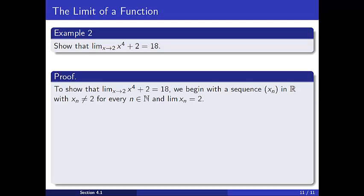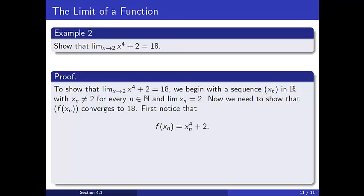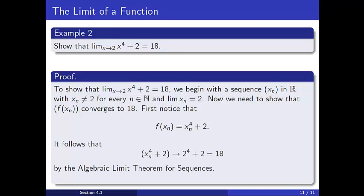Now for the formal proof. To begin, we let x sub n be a sequence in R with x sub n not equal to 2 for all n, and the sequence x sub n converges to 2. We need to show that the sequence f of x sub n converges to 18. Observe that f of x sub n is equal to x sub n to the 4th plus 2. It follows from the algebraic limit theorem for sequences that the sequence x sub n to the 4th plus 2 converges to 18. Thus the sequence f of x sub n converges to 18, and so the limit as x approaches 2 of x to the 4th plus 2 is 18 as desired.